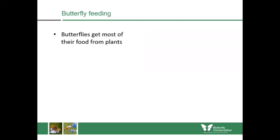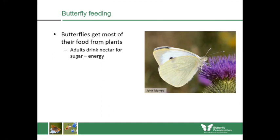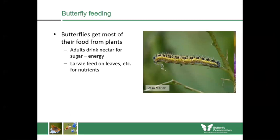When butterflies feed they get most of their food from plants. Whenever you see an adult butterfly visiting a flower they're drinking nectar, which gives them a source of sugar and energy to fly around. As larvae or caterpillars they mostly feed upon leaves, seeds, roots or different parts of plants, and this is when they get the nutrients which will sustain them for the rest of their lives.